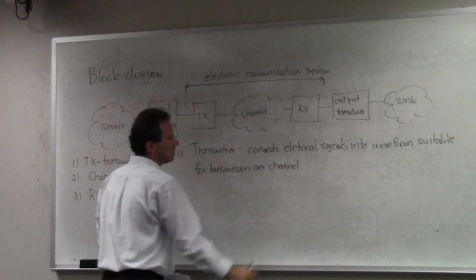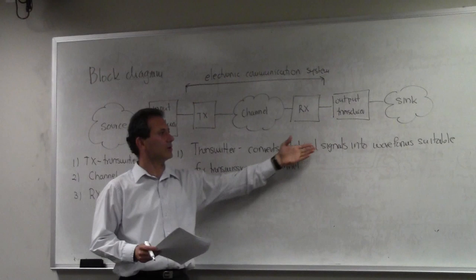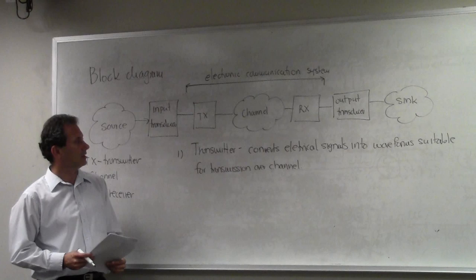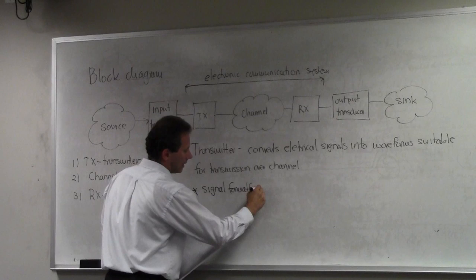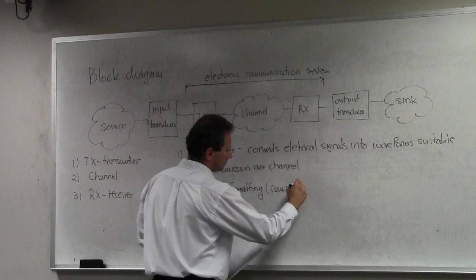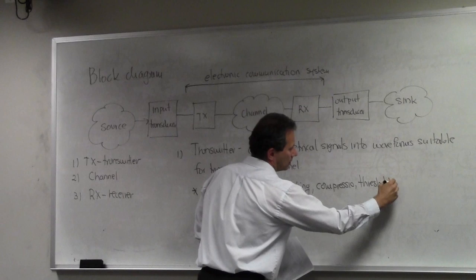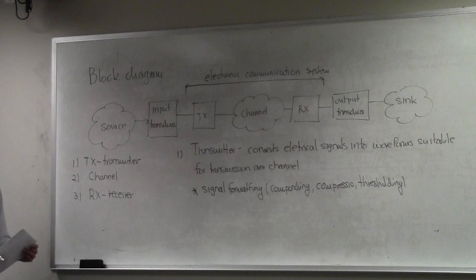The transmitter converts electric signals into waveforms suitable for transmission over a digital communication channel. This is not an easy task — it performs several tasks in the process of converting an electric signal to waveforms suitable for transmission. In a digital communication system, these tasks include signal formatting, which involves companding — range compression of the signal — and thresholding. Essentially, working on the analog signal to ensure it is within a certain range with properties that allow further processing.